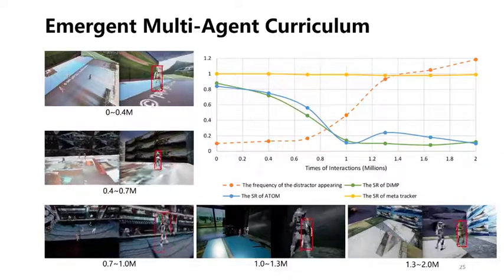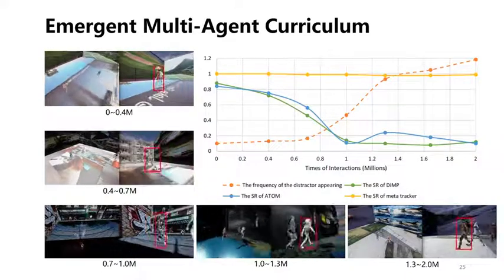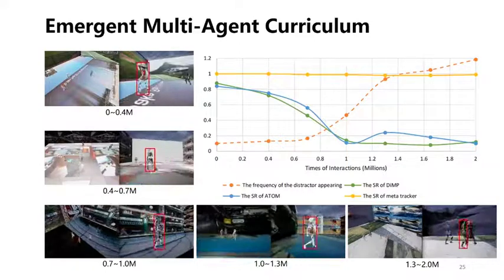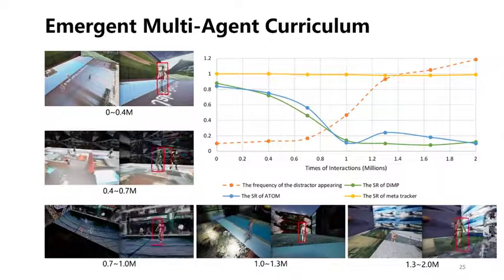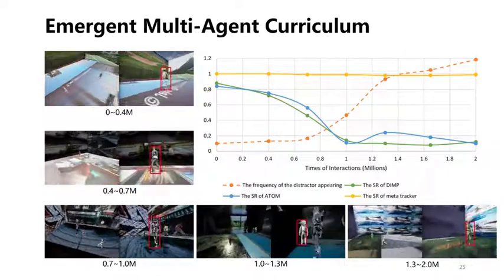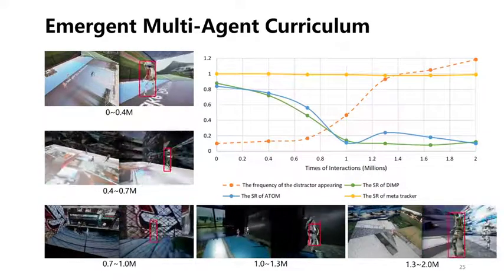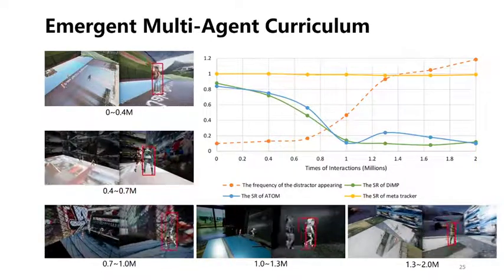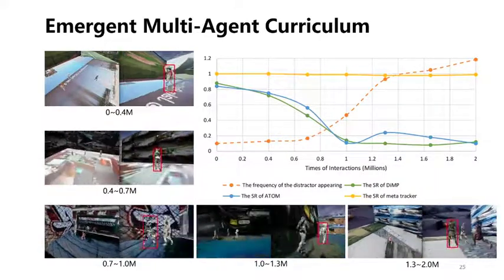The meta-policies are of different difficulty levels, constructing a multi-agent curriculum for the student. The frequency of distractor appearance increases during learning as shown by the yellow curve. Meanwhile, the success rate of baseline visual trackers decreases drastically — shown by the blue and green curves. In contrast, the performance of our model is not affected too much.